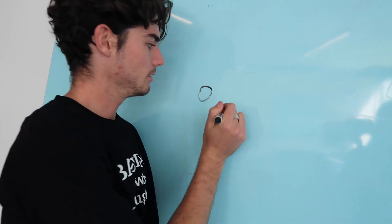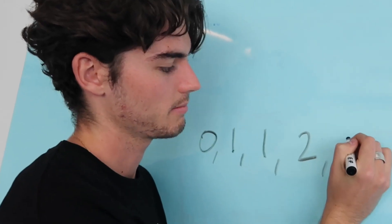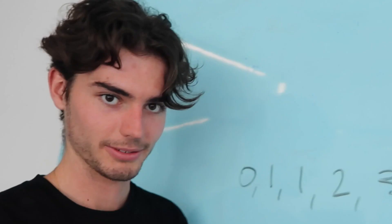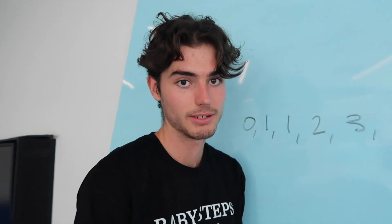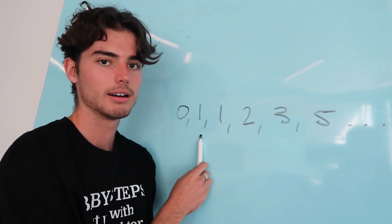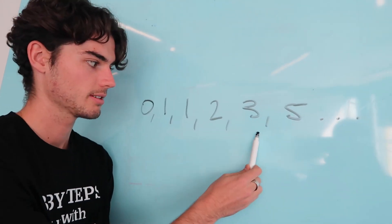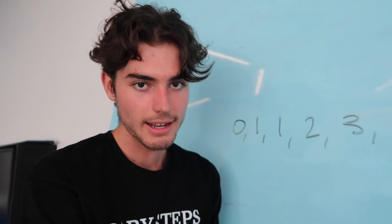So the Fibonacci sequence is a series of numbers — there's way more and we'll get to those later. The way the Fibonacci sequence works is that the first two numbers make the next number: so 1 plus 1 is 2, 1 plus 2 is 3, 2 plus 3 is 5, and this can carry on for ages and ages.